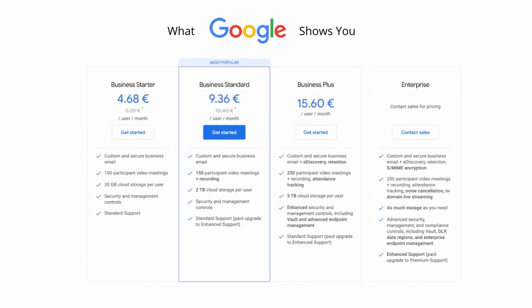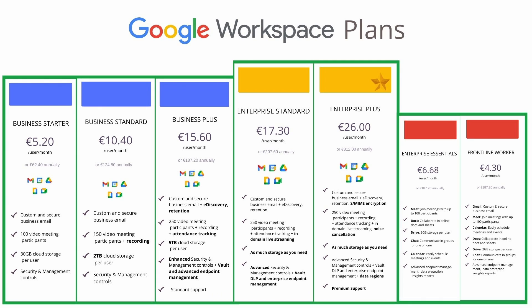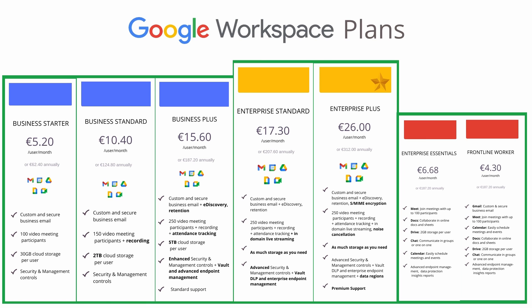When you go to Google's website you're going to see four tiers: Business Starter, Business Standard, Business Plus, and then Enterprise as a single tier — whereas there are actually two or technically three tiers within the enterprise space. On our website at Damson we show a lot more: Business Starter, Standard, Plus, Enterprise Standard, and Enterprise Plus. I'm also going to talk about two additional plans: Enterprise Essentials and Frontline Worker, which you might have previously known as Deskless Worker.